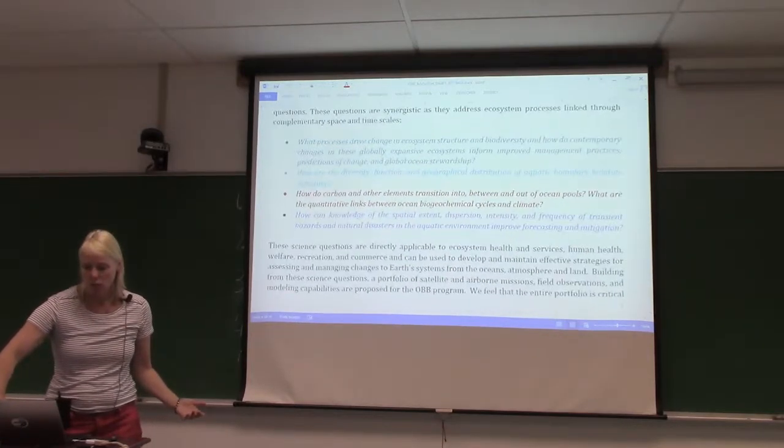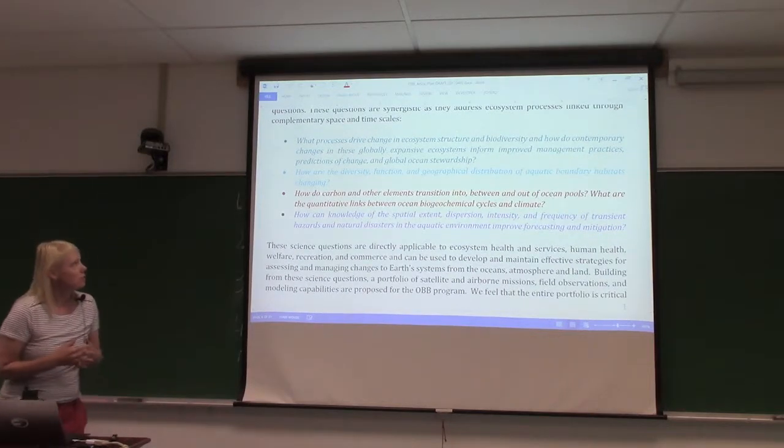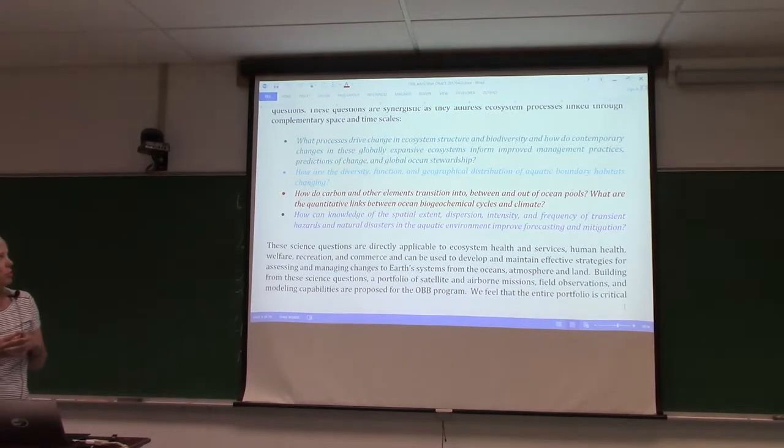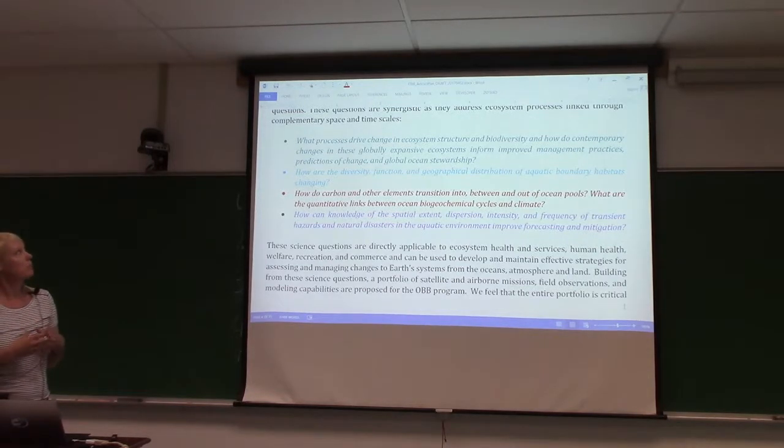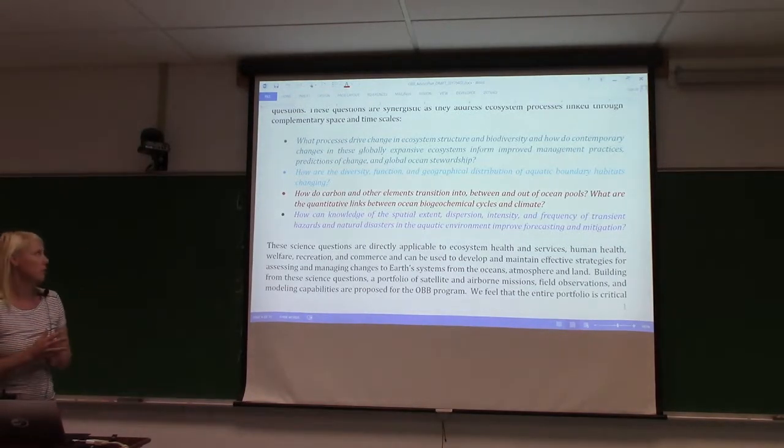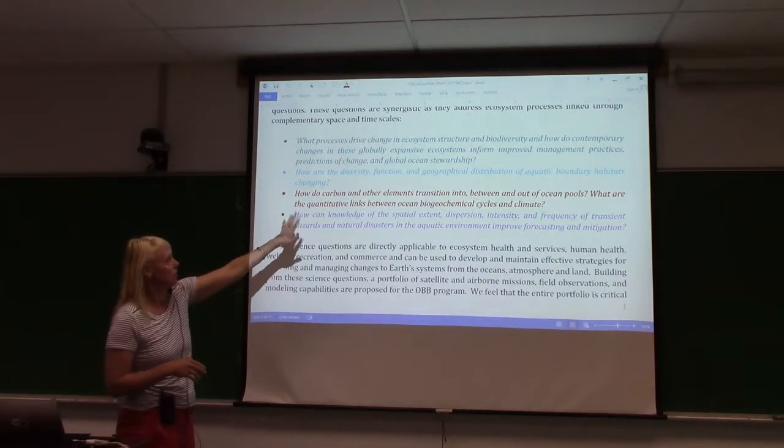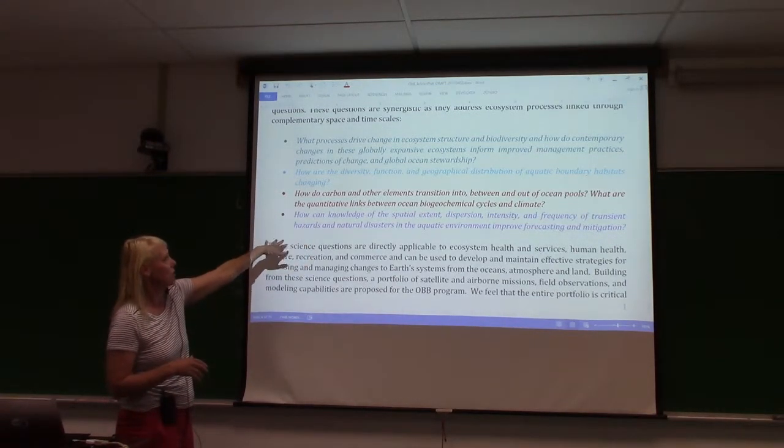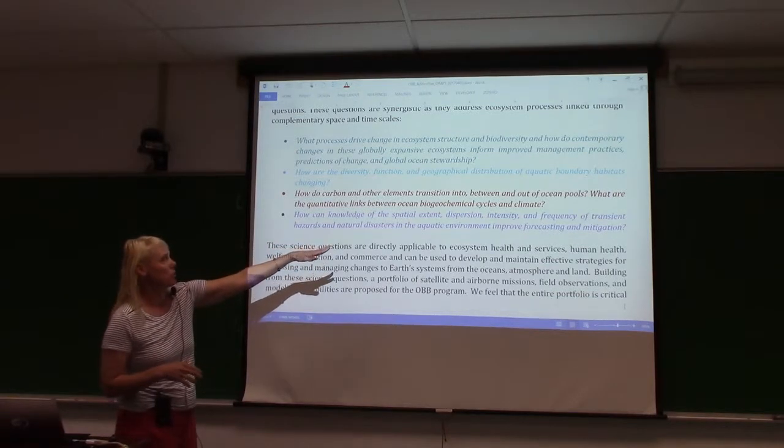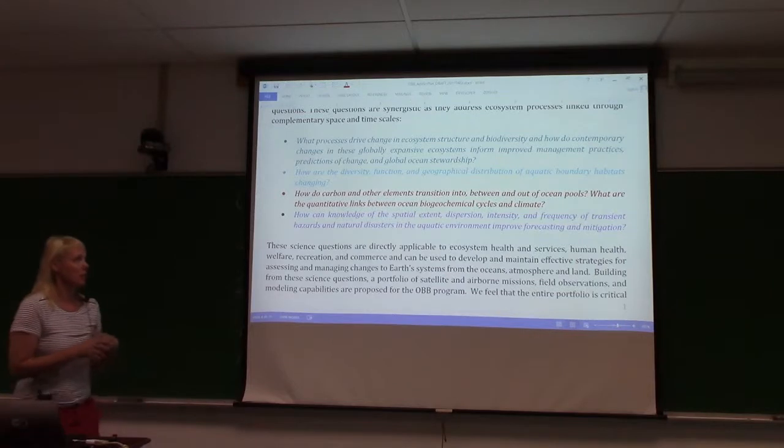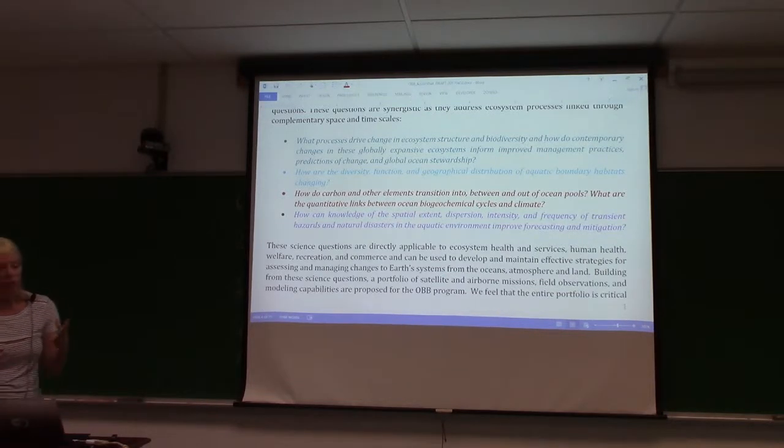Here are the main four science questions. What processes drive change in ecosystem structure and biodiversity? And how do contemporary changes in these globally expansive ecosystems inform improved management practices? Diversity function of aquatic boundary habitats, carbon and elemental transitions, and knowledge of the spatial extent, dispersion, intensity, and frequency of hazards and disasters.